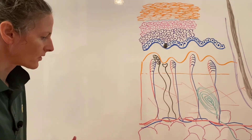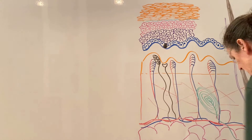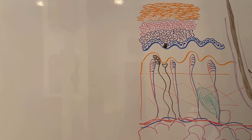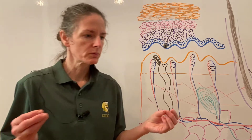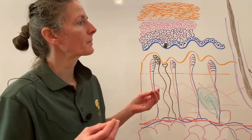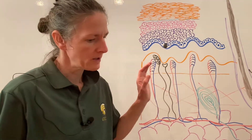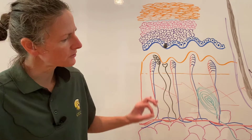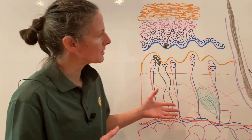The skin also contains glands — sweat glands and sebaceous glands. Sebaceous glands secrete oil onto the skin and are typically associated with a hair follicle. There are two types of sweat glands: merocrine sweat glands, responsible for typical eccrine perspiration, and apocrine sweat glands, typically located in the groin and armpit area, which produce a more oily type of sweat.